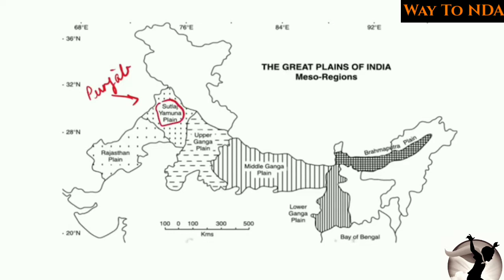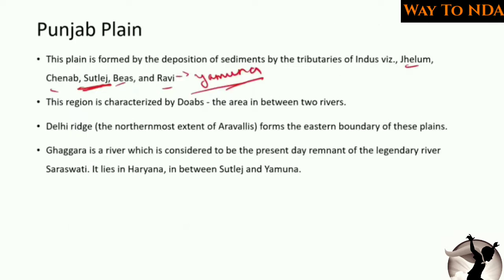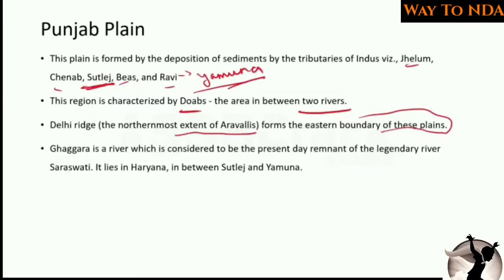This region is characterized by Doabs. A Doab is the area between two rivers — 'Do' means two and 'Ab' means water. The Delhi Ridge is the northernmost extent of the Aravallis and forms the eastern boundary of this plain.